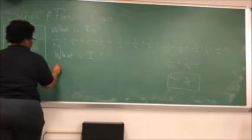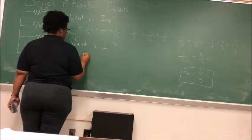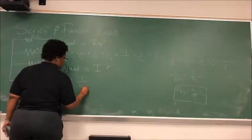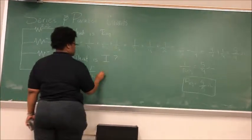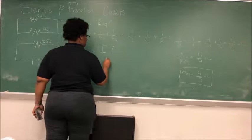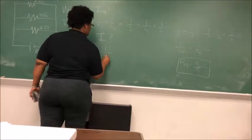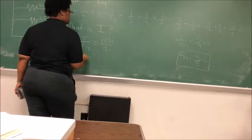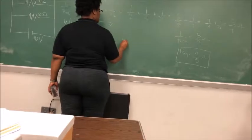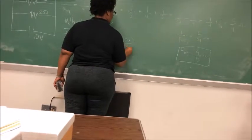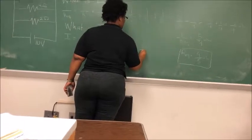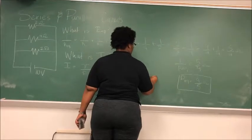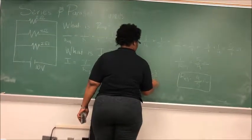So your I is going to be equal to your voltage over your R equivalent. So this is going to be equal to 10 over 4 over 5 ohms. So from here you can just do the inverse, which is 10 times 5 over 4. 10 times 5 is 50 over 4. You can simplify that. You're going to have 25 over 2.